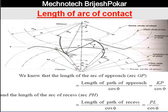point H, so this GPH is called the length of arc of contact. The length of path of contact is KPL — that we have seen previously. KPL is the length of path of contact and GPH is the length of arc of contact.